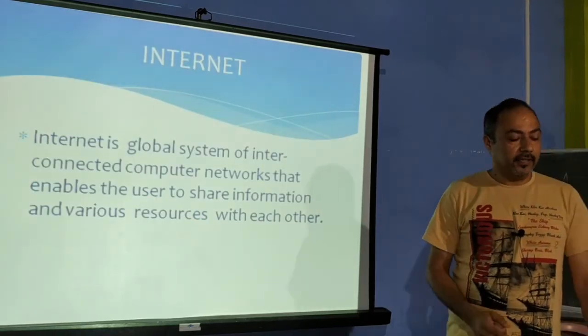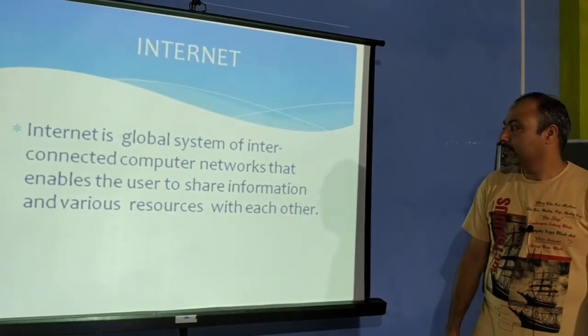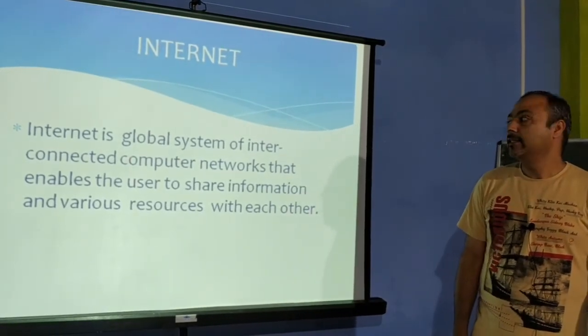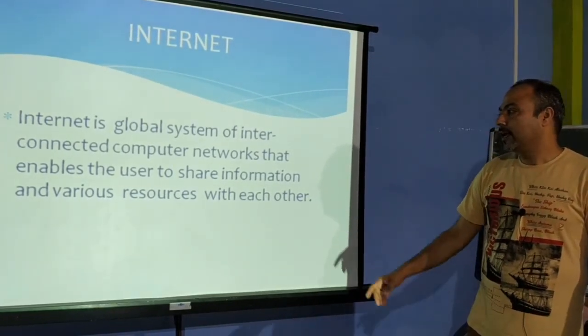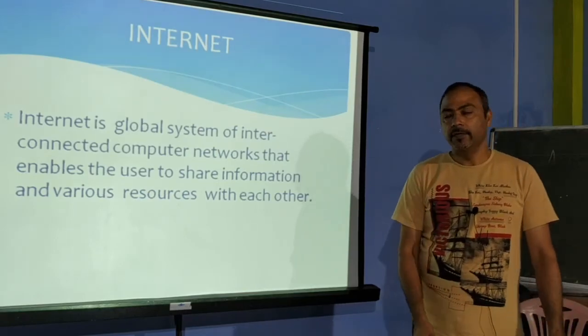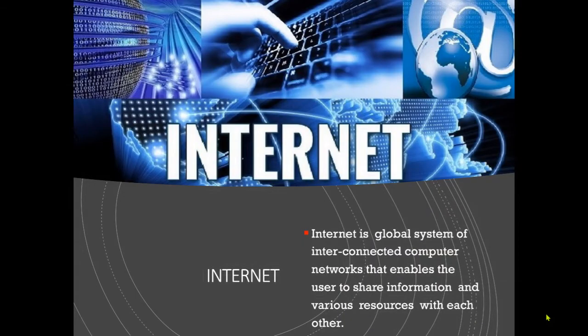The internet is a global system of interconnected computer networks that enables users to share information and various resources with each other. It is a network of networks where each computer is connected to share resources amongst each other. These resources may be of different types: intellectual resources, financial resources, material resources, knowledge resources, software, and hardware resources.